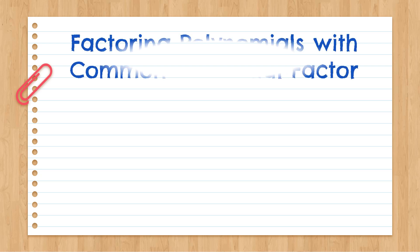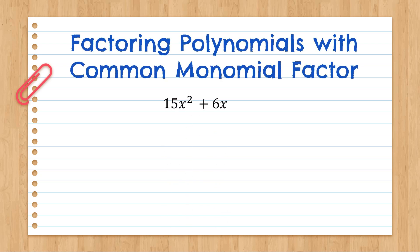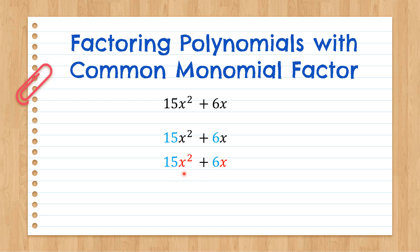So now let's have factoring polynomials with common monomial factor. We have 15x squared plus 6x. We have a numerical coefficient of 15 and 6, and a literal coefficient of x squared and x. All you have to do is find their GCF. The GCF of 15 and 6 is 3, because 15 is 3 times 5, and 6 is 3 times 2. For the literal coefficient, x squared and x — take the lowest exponent — so we get a GCF of 3x.